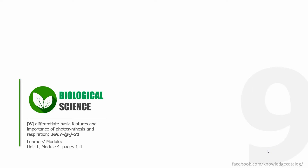Our specific learning competency is going to be differentiating the basic features and the importance of photosynthesis and respiration. To be able to follow through more effectively, you may open your Learner's Module in Unit 1, Module 4, pages 1 to 4.